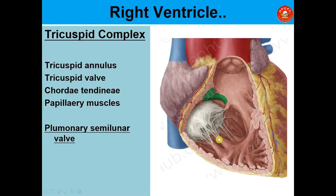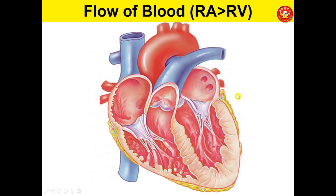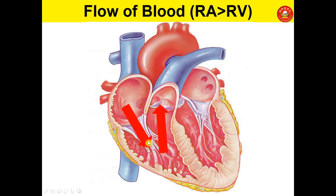The tricuspid complex consists of four structures: the tricuspid annulus, the tricuspid valve itself, the chordae tendineae, and the papillary muscles. When blood enters, the valve closes and prevents blood from returning toward the atrium, directing flow toward the pulmonary trunk. Blood flows from the right atrium to the right ventricle through the tricuspid valve, then to the pulmonary trunk to reach the lungs to get oxygen.